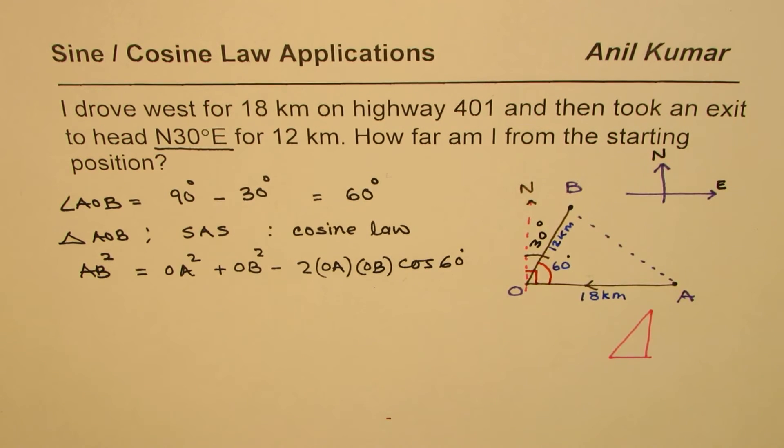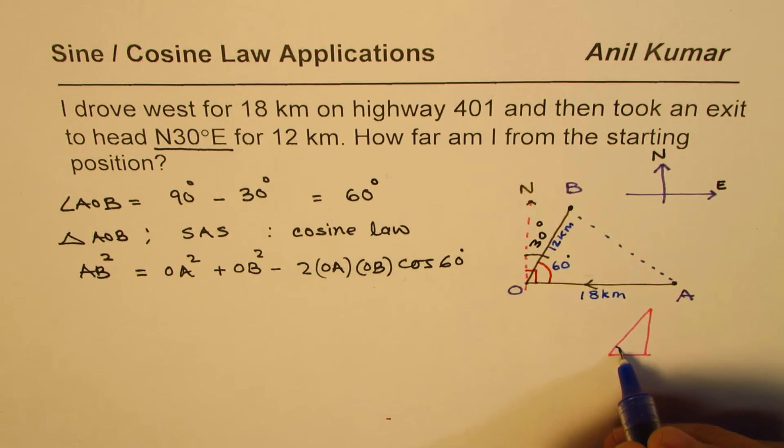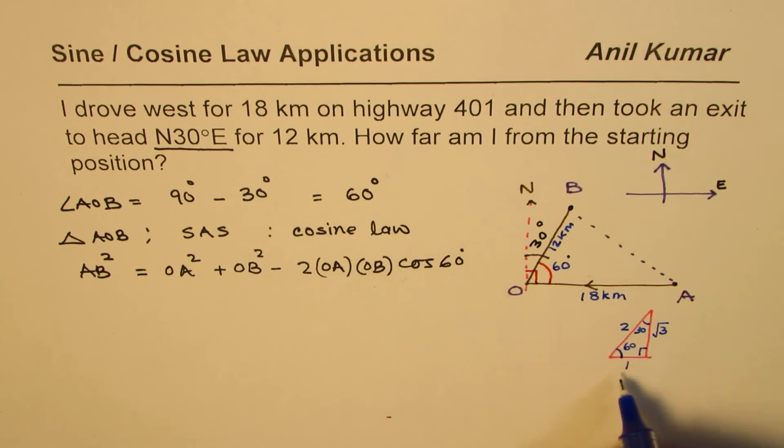Sometimes calculator may not be allowed, so if calculator is not allowed, in that case we'll make a special triangle 60-30-90. These sides are 2, 1, and √3. Cos of 60 is half, 1 over 2.